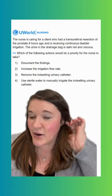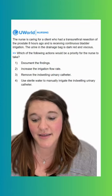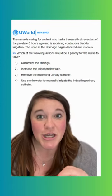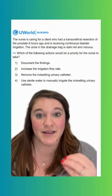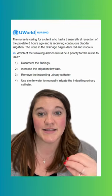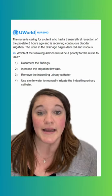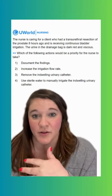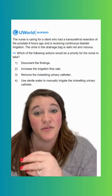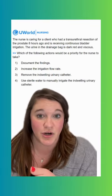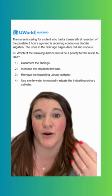Option two says to increase the irrigation flow rate. This is going to be our correct option. So the goal with continuous bladder irrigation is to prevent a urinary obstruction. We have that catheter in place, we're putting fluid in constantly and pulling it out to prevent clot formation and then bladder obstruction.